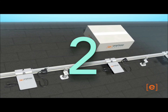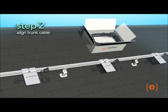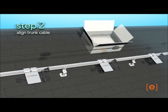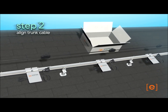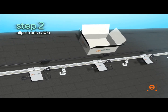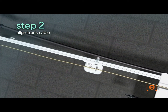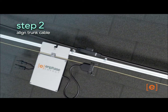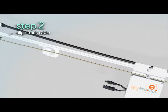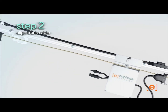Next, lay out the trunk cable in the location required, with the trunk connectors aligned to the location of the microinverters. The cable can be placed on either side of the racking and may be secured with tie wraps or clips.